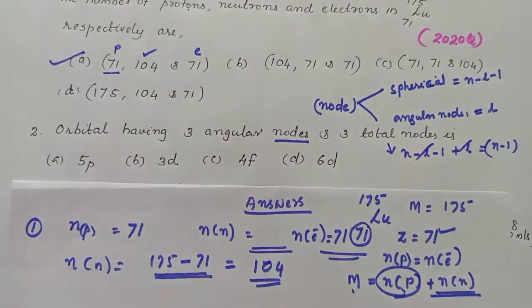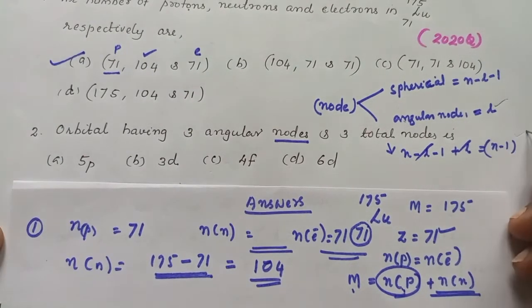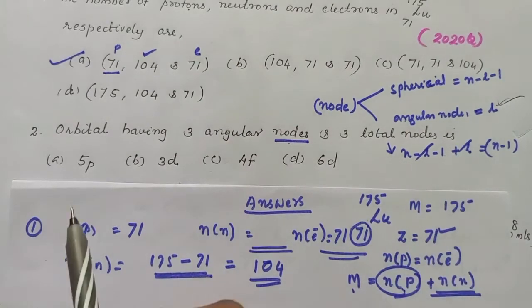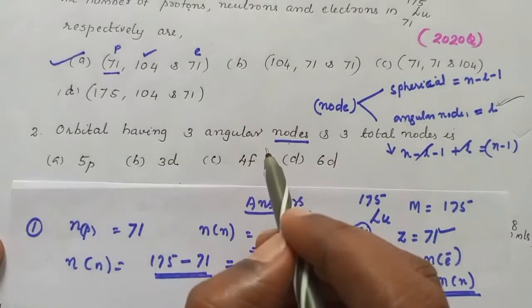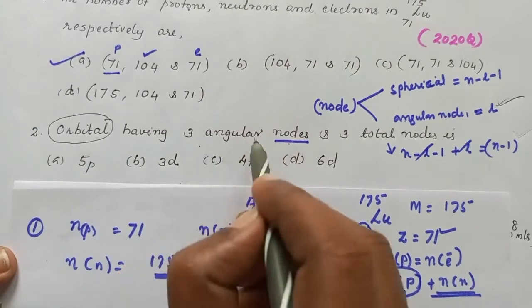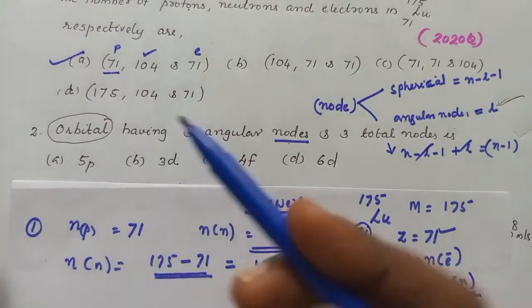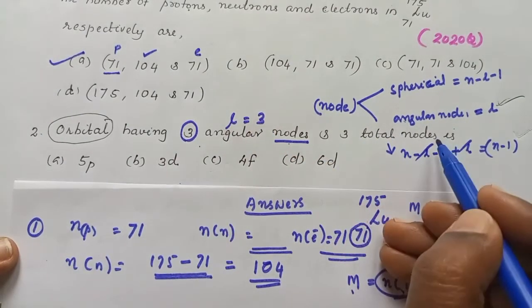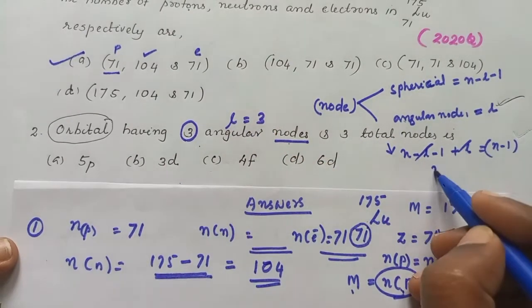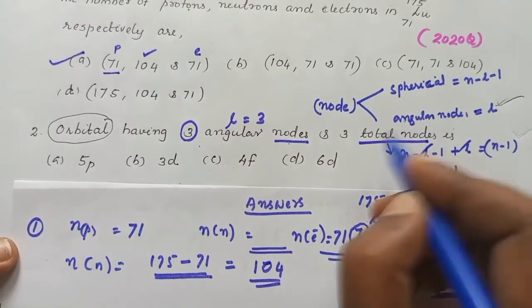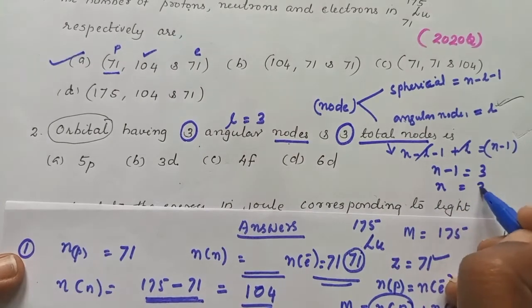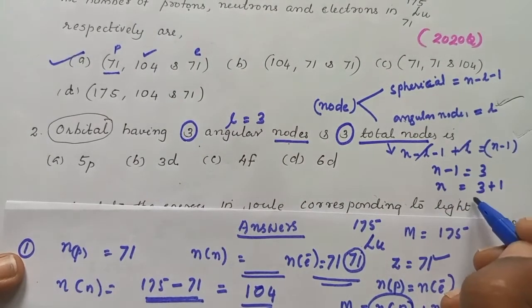From these equations we can calculate angular nodes and total nodes. Here we consider the orbital corresponding to angular node value l equals 3, so angular node equals 3. Total node equals n minus 1, and that is also given as 3. So n equals 3 plus 1, which equals 4.